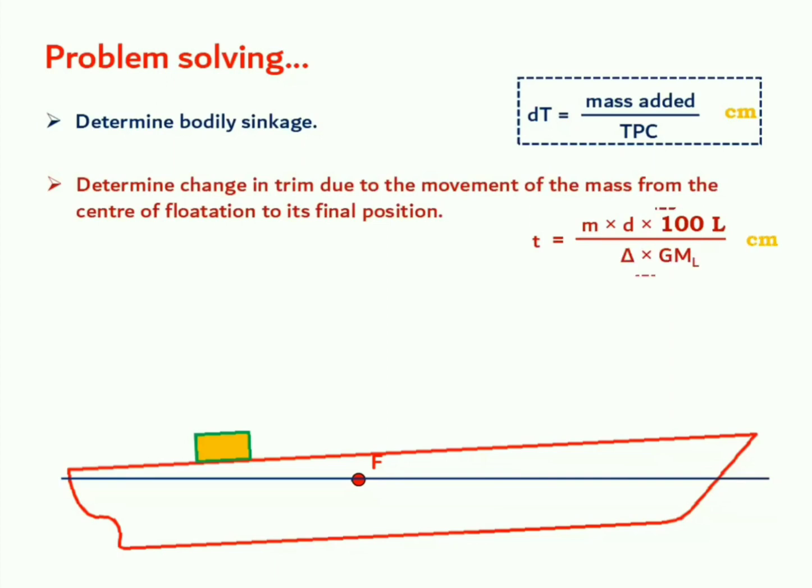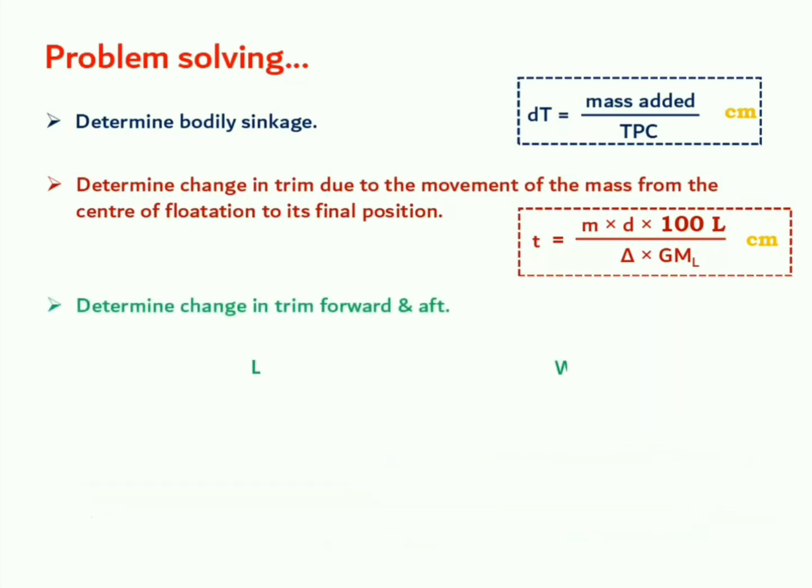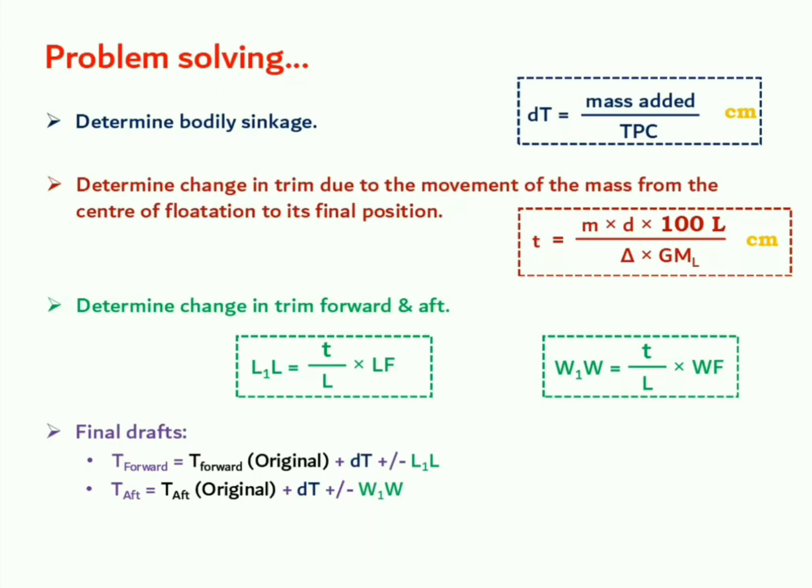Change of trim is determined by m into d into 100L divided by delta into GM longitudinal. Now it's time to determine change in trim forward and aft. L1L and W1W will be determined. And finally, it's time to determine final drafts. They can be determined by adding the bodily sinkage in the original values and by either adding or subtracting the change in trim forward and aft, as the case may be.